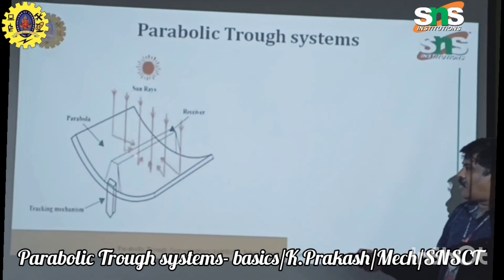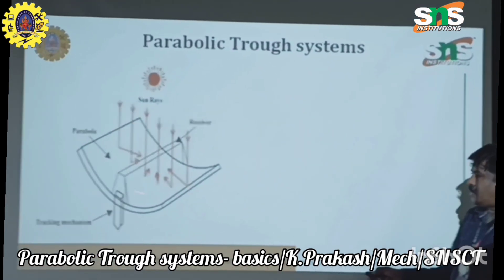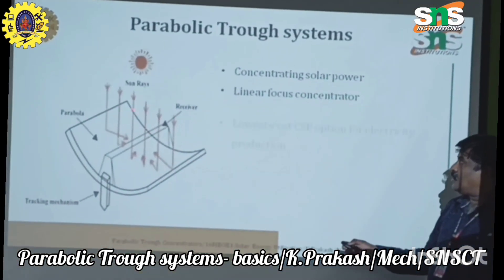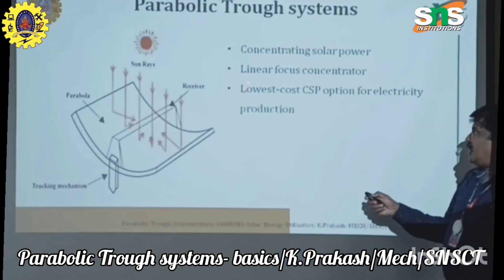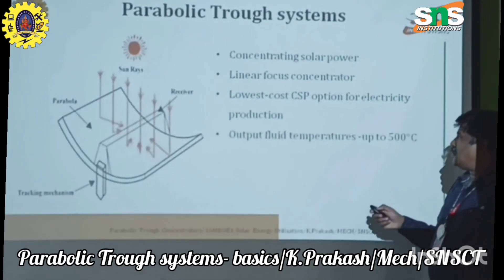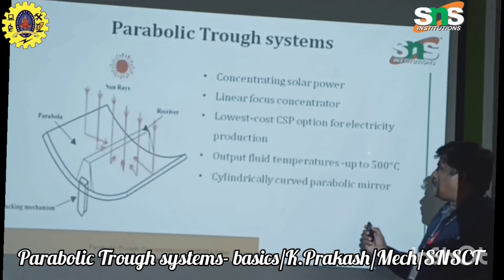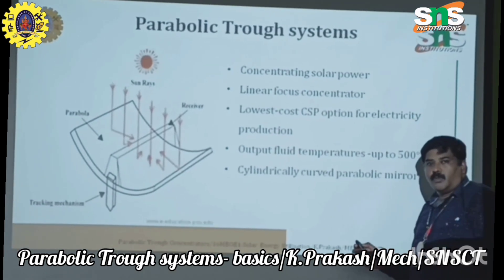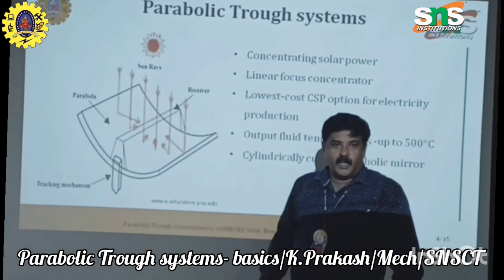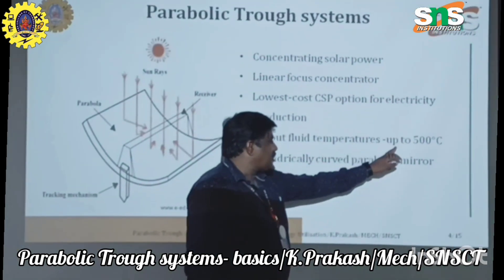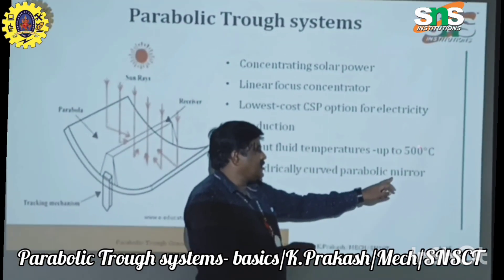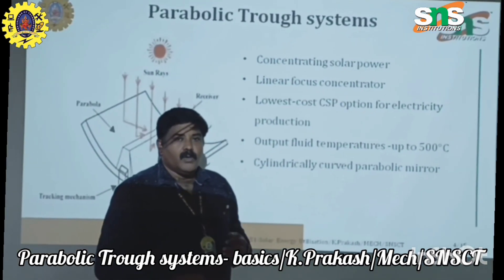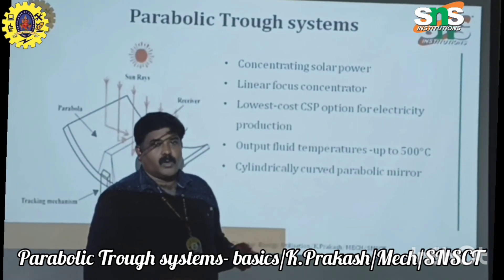The sun rays fall on the reflective surface. There is a parabolic shape and a tracking mechanism where it receives the radiation. This is a linear focused concentrator — a low cost CSP option. The output fluid temperature is 500 degrees Celsius, which is very important. The operating range is up to 500 degrees Celsius, whereas the non-concentrating collector temperature is only around 100 to 250 degrees Celsius.